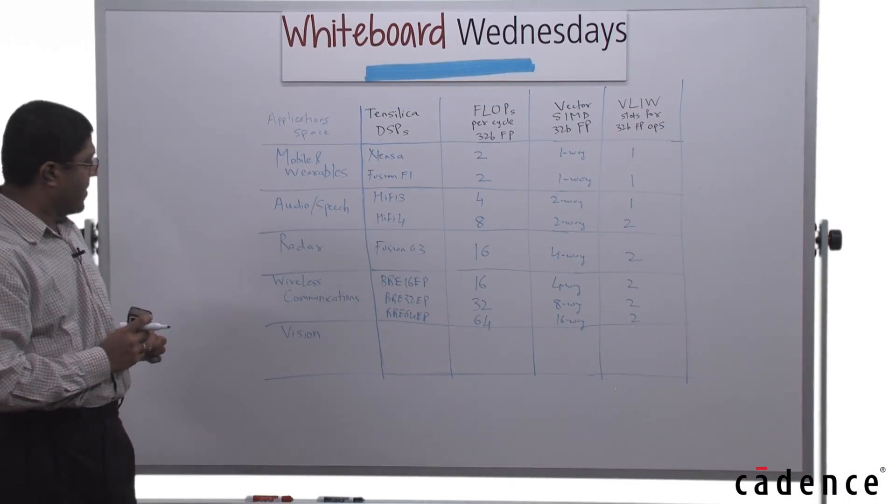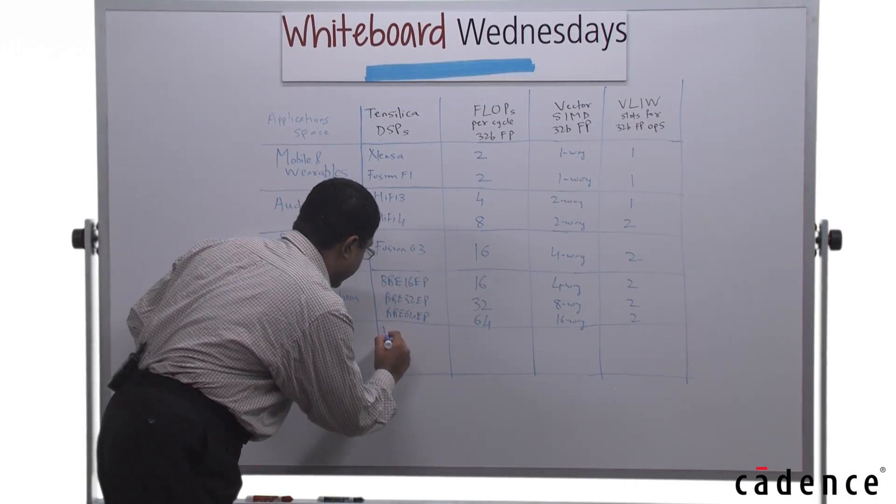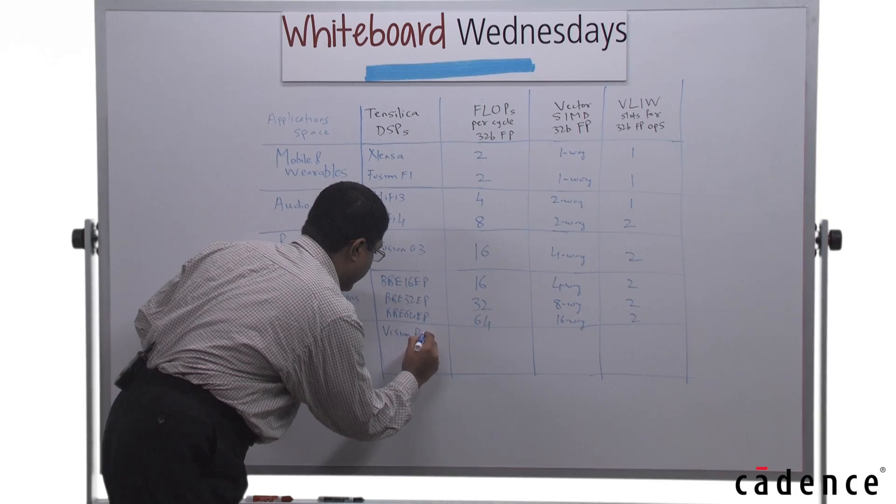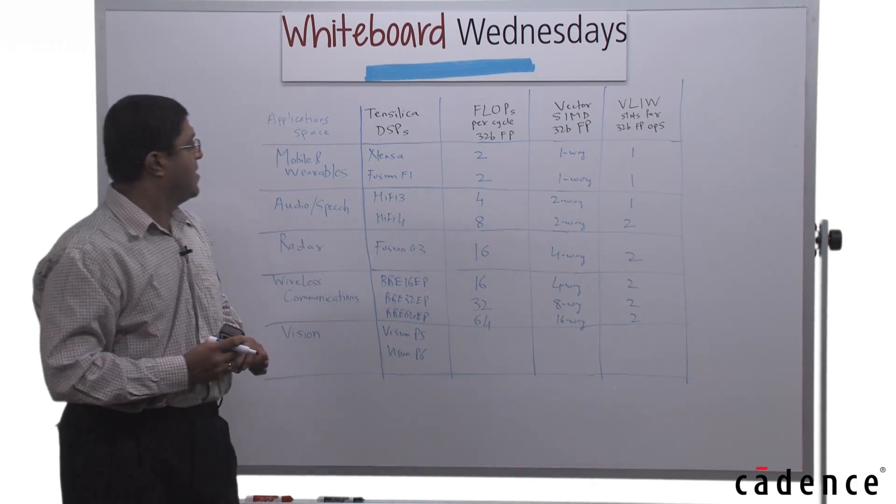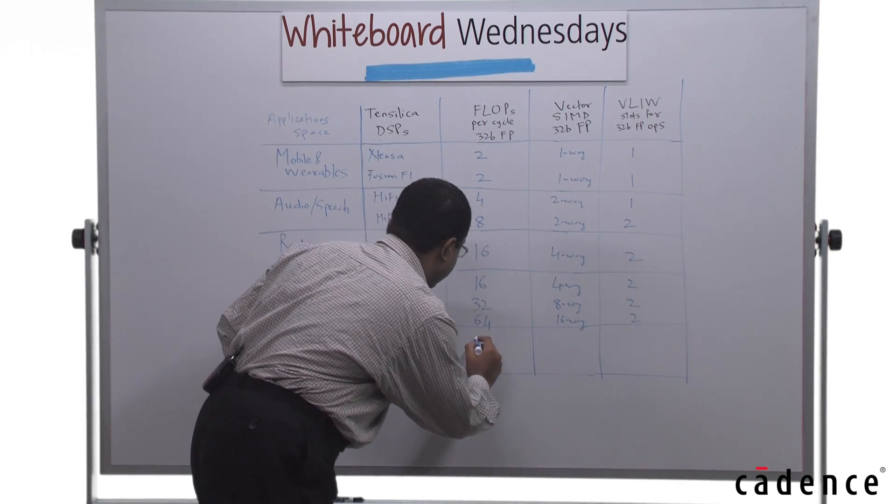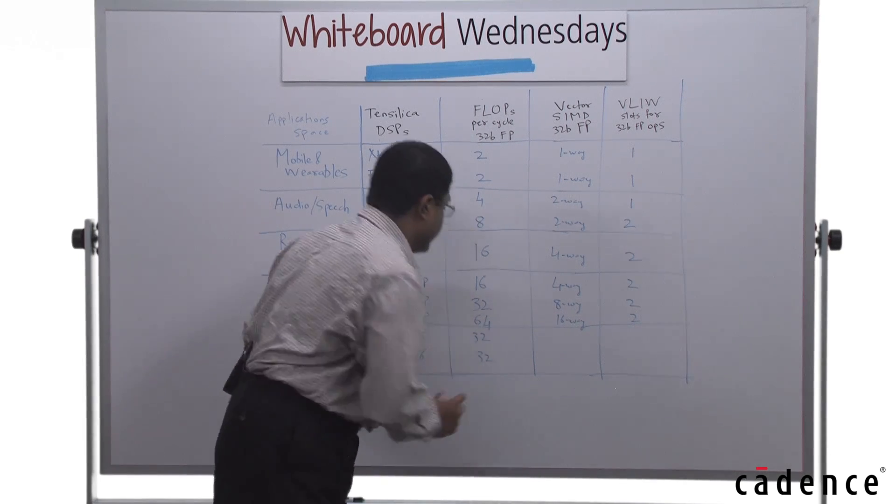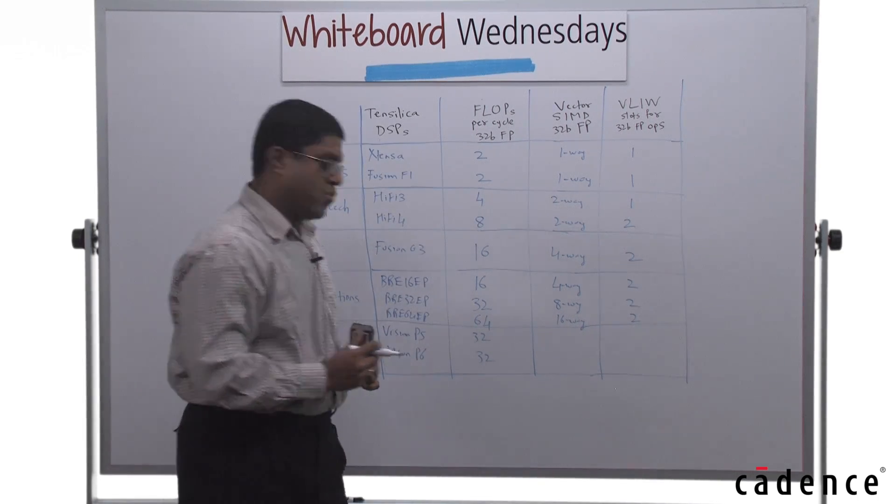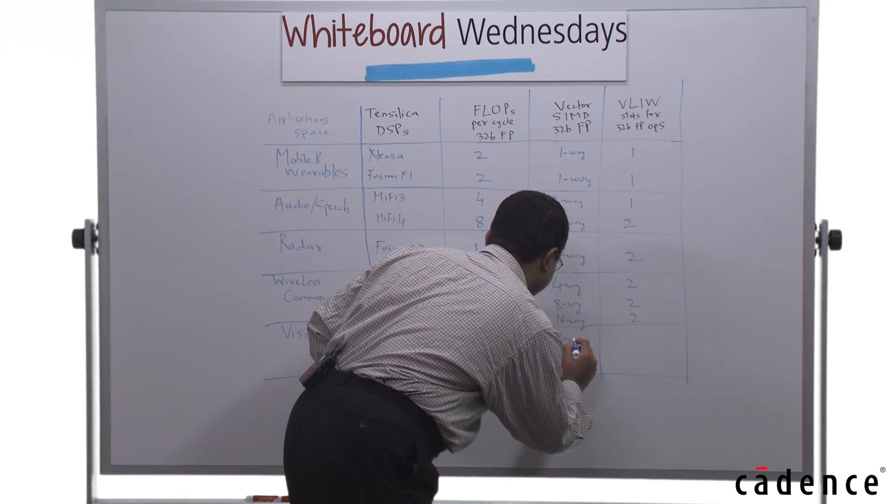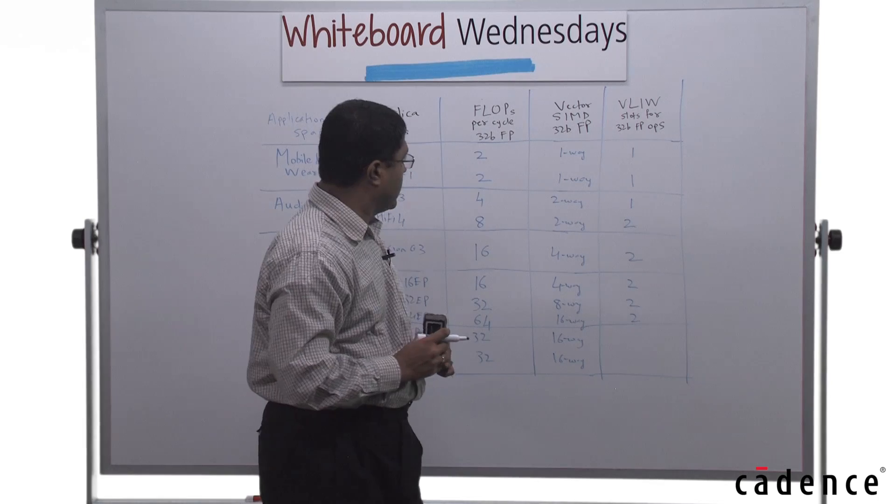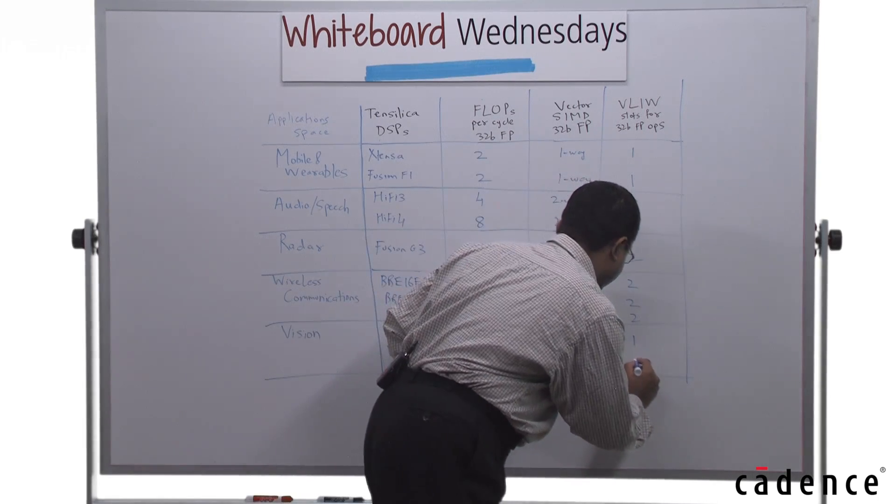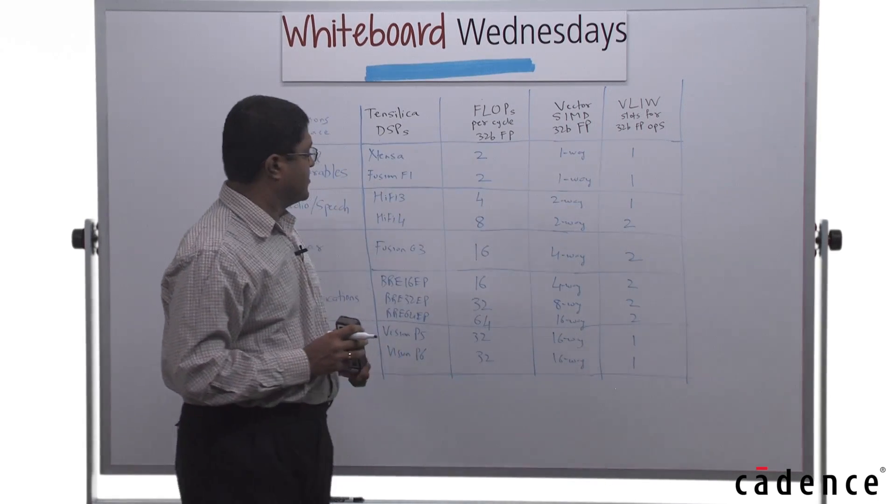And for the vision application space, the Vision P5 and the Vision P6 DSPs both of them do 32 FLOPS per cycle, both of them are 16-way SIMD for the 32-bit floating point operations, and both of them schedule the floating point operations in one slot.